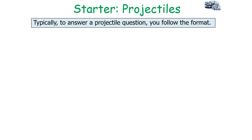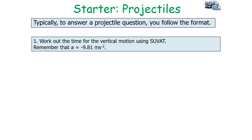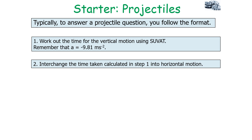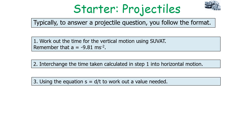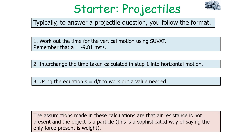To answer a projectile question, follow this format. First, work out the time using the vertical SUVAT equations, remembering that a = −9.81 m/s². Second, carry that time value into the horizontal motion equations. Third, use velocity = displacement ÷ time to calculate the required horizontal value. The assumptions in these calculations are that air resistance is not present and the object is treated as a particle — meaning the only force present is weight.